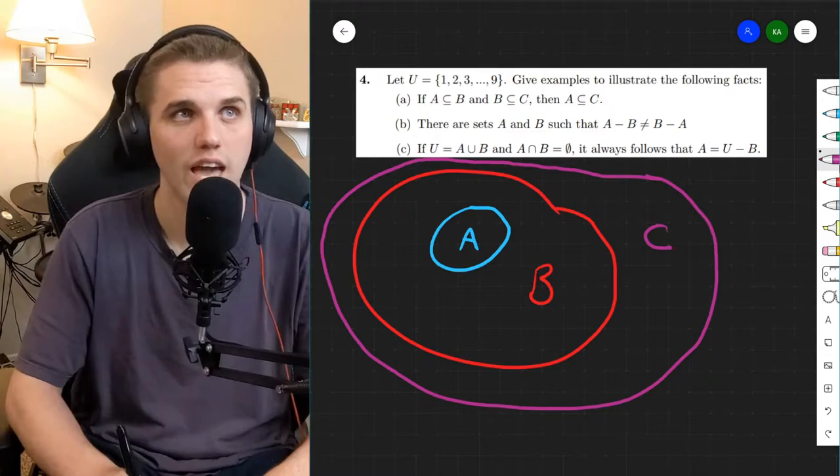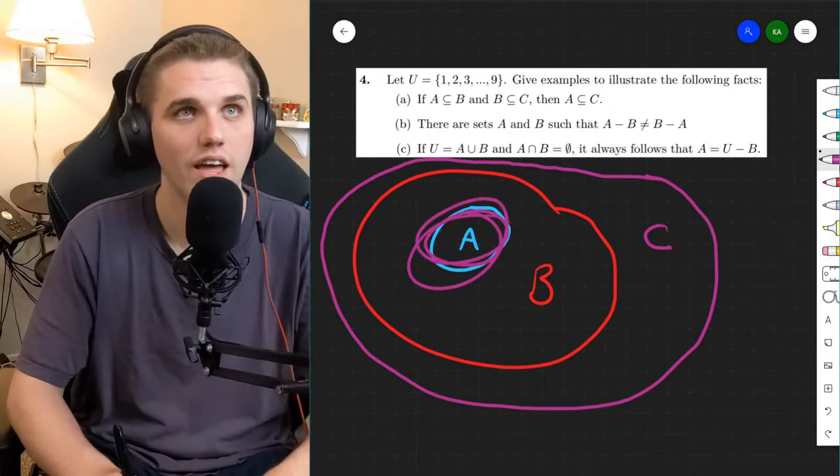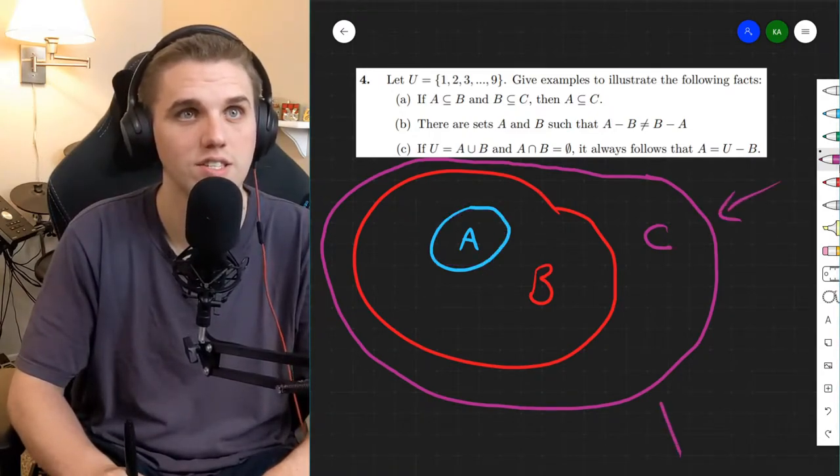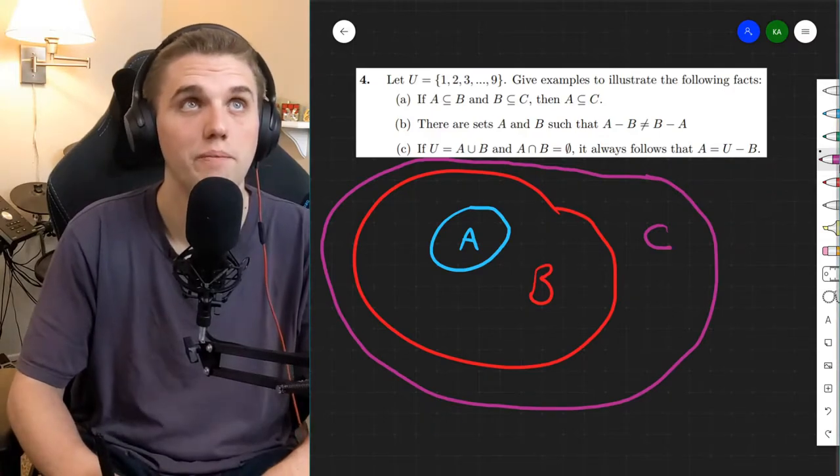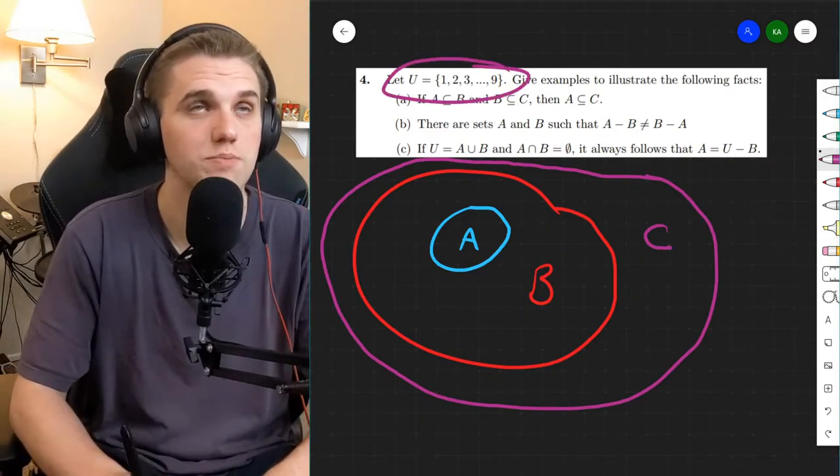Well, can we see that visually? Yeah, A is right here. And that is certainly inside this C here. But we need to give examples using this specific universe.